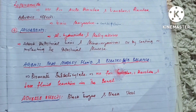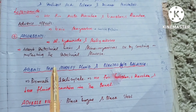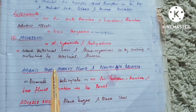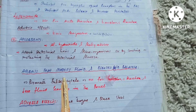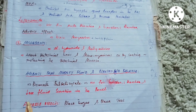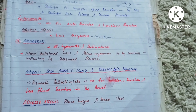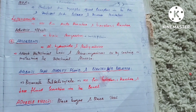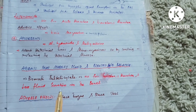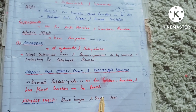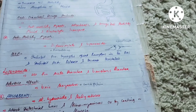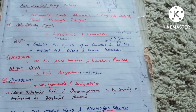Another strategy for diarrhea control involves agents that modify fluid and electrolyte balance. Bismuth subsalicylate is the agent that modifies fluid and electrolyte balance. It is also used for traveler's diarrhea, and its main function is to decrease fluid secretion in the bowel, thereby controlling diarrhea. The adverse effects of bismuth subsalicylate include black tongue and black stool. This was all about anti-diarrheal drugs — for more videos, please subscribe, like, and share.